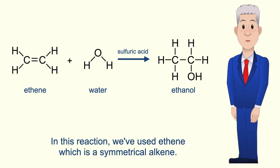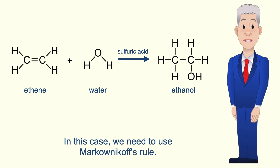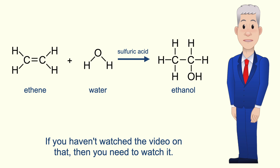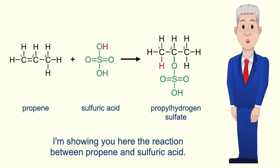Now in this reaction we've used ethene, which is a symmetrical alkene. But what if we use an asymmetric alkene such as propene? Well, in this case we need to use Markovnikov's rule. And if you haven't watched the video on that, then you need to watch it.